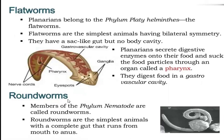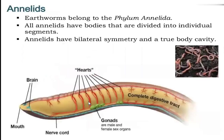Now, roundworms — roundworms are simple animals with a complete gut from mouth to anus. Next is Annelida — earthworms. Annelida are segmented worms.